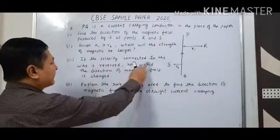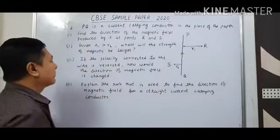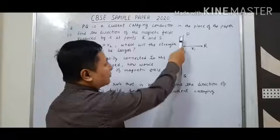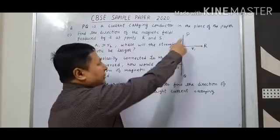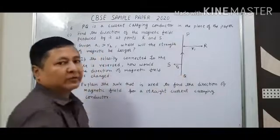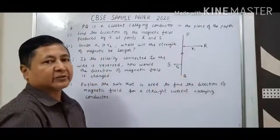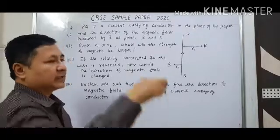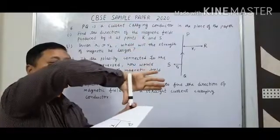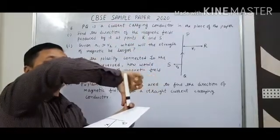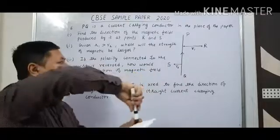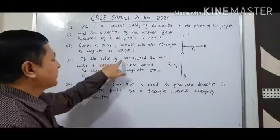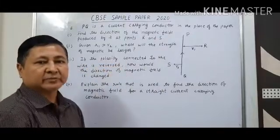If the polarity connected to the wire is reversed — currently current flows from Q to P — and we make it flow from P to Q, the direction of magnetic field will also get reversed. If the current is flowing downward, the fingers wrap in the clockwise direction. So when we change the direction of current or reverse the polarity, the direction of magnetic field is also changed.